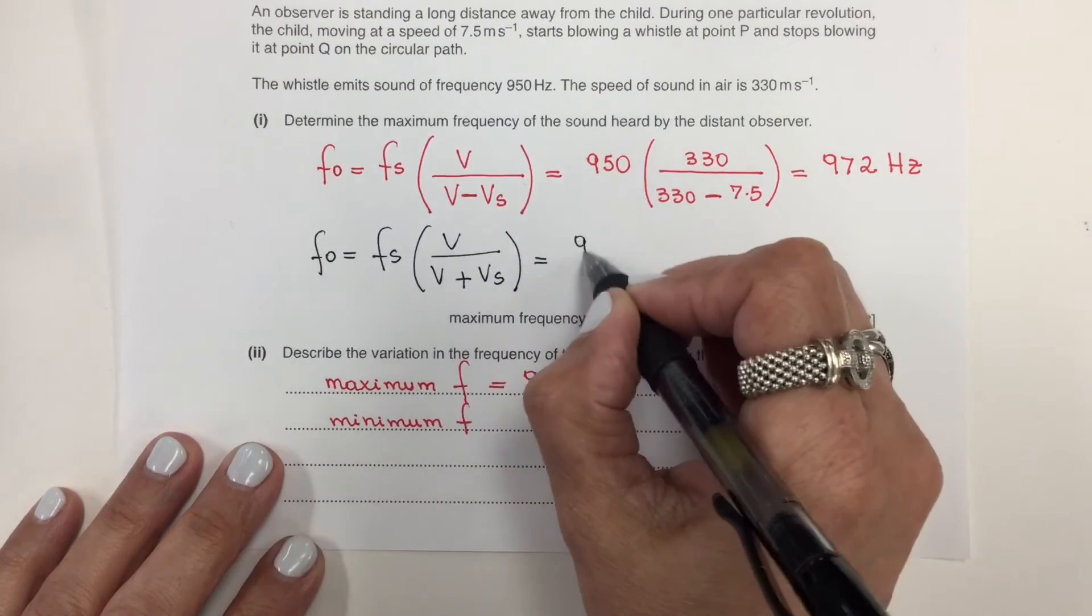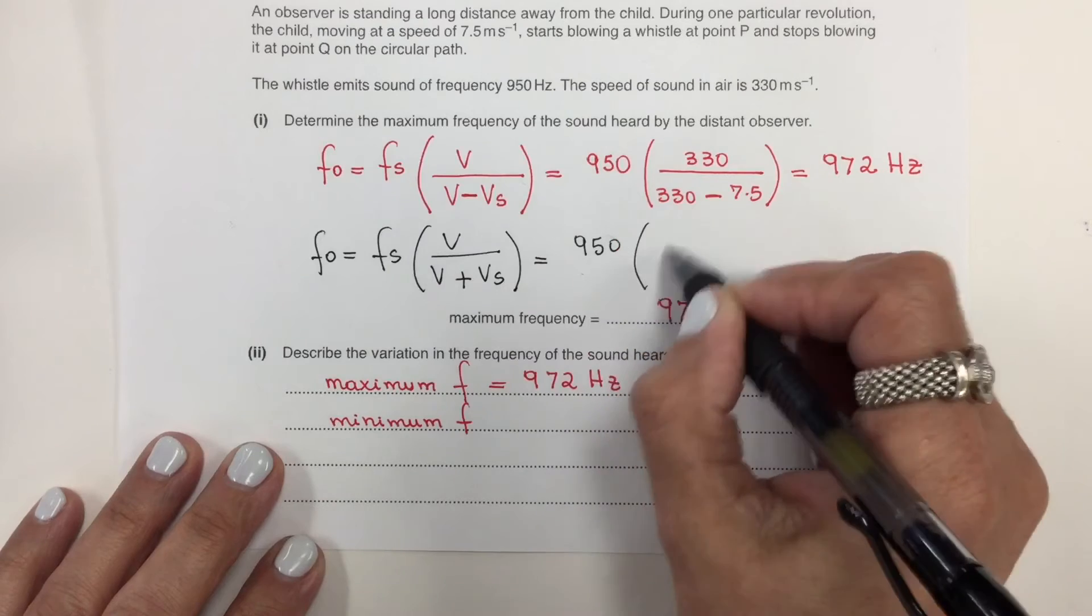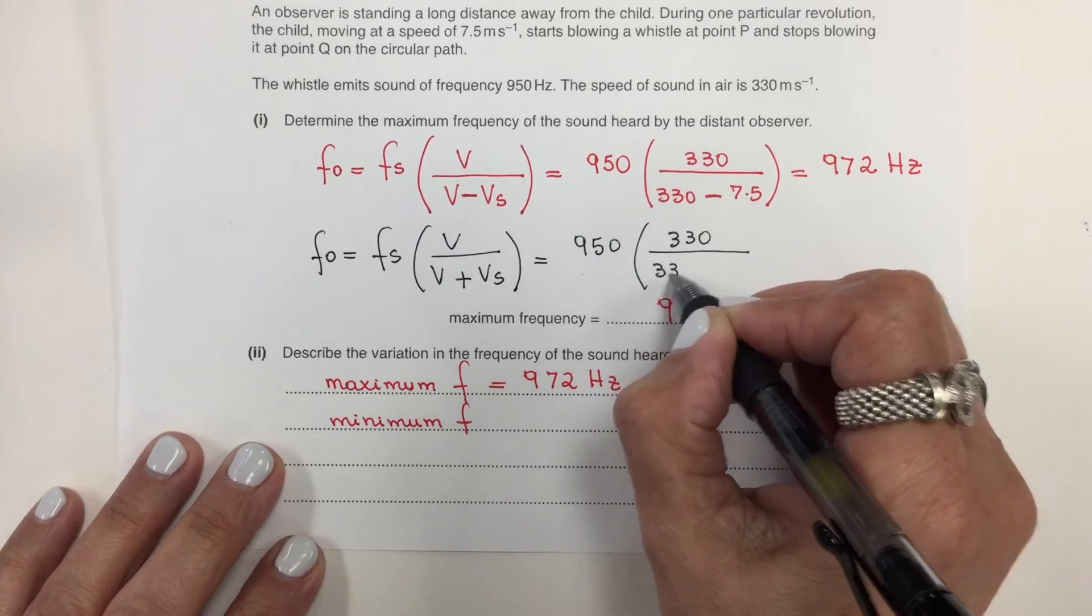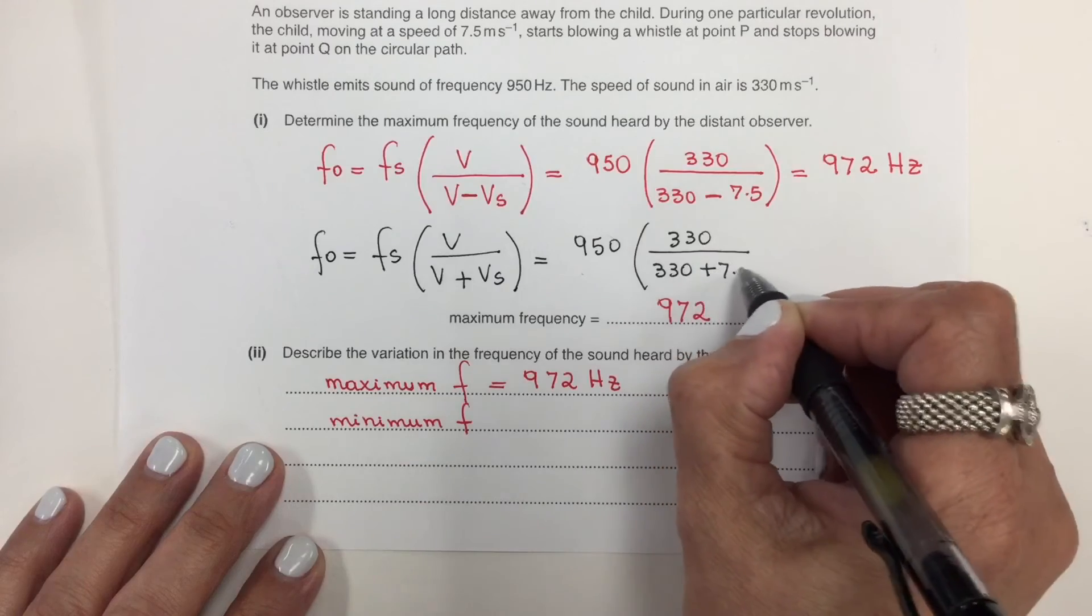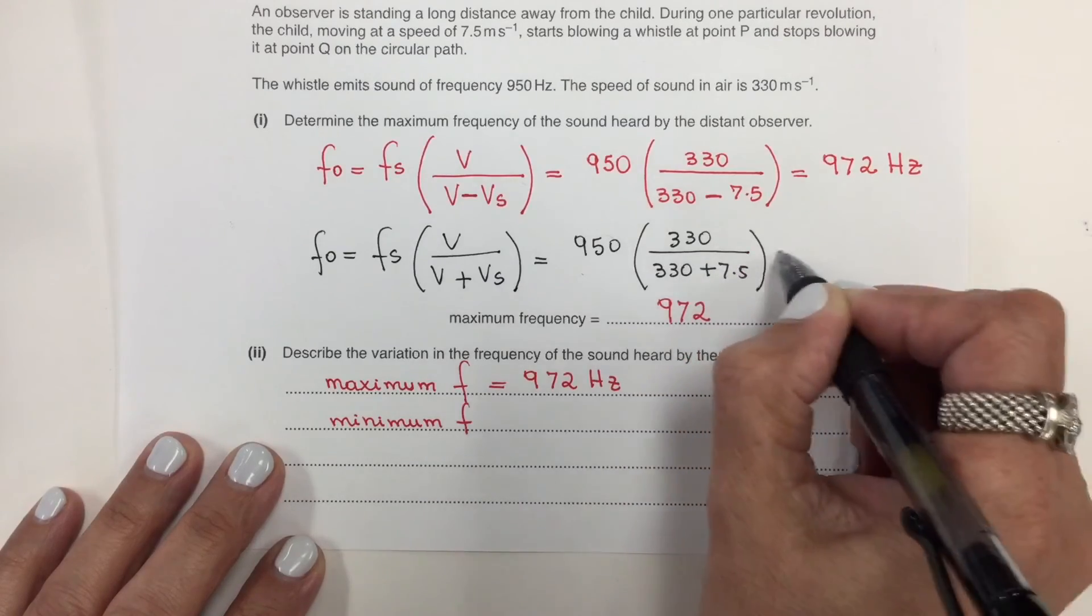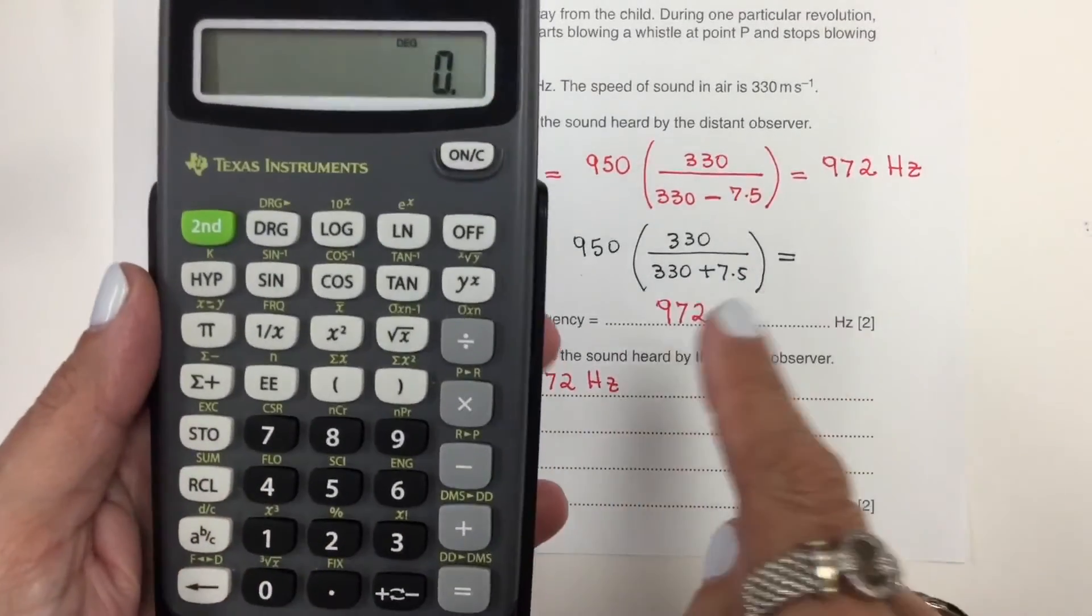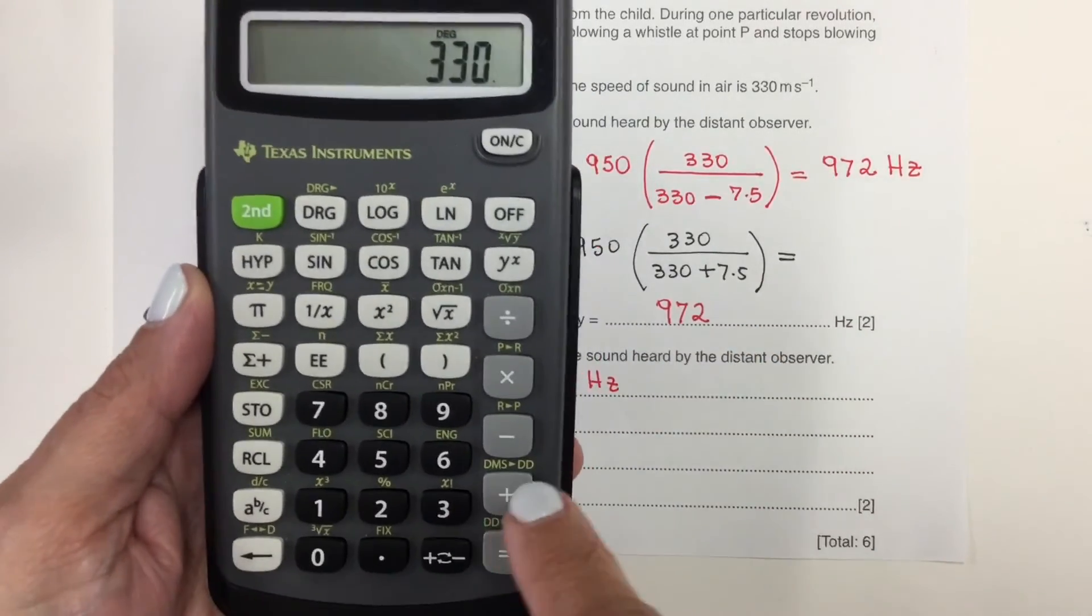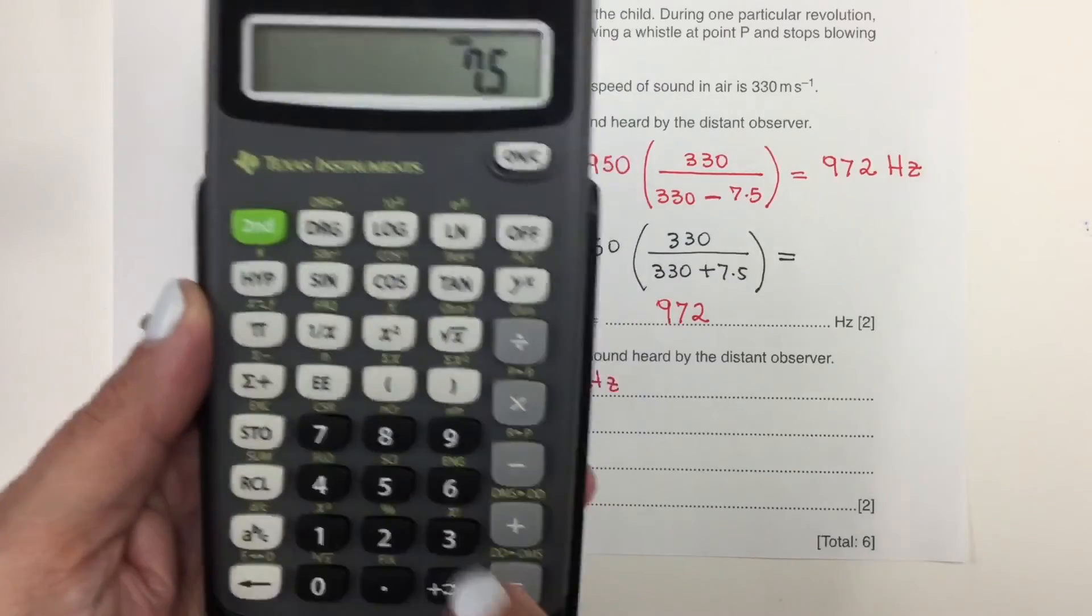So that will be the same values: 330 over 330 plus 7.5. So the way that I do is, I add those two first. Plus 7.5, the result.